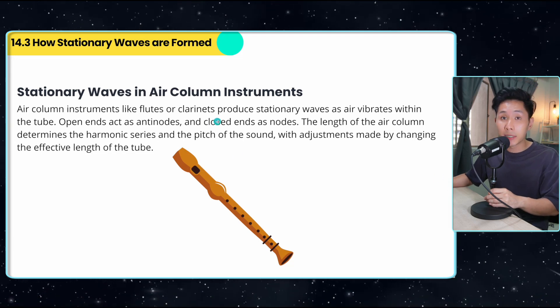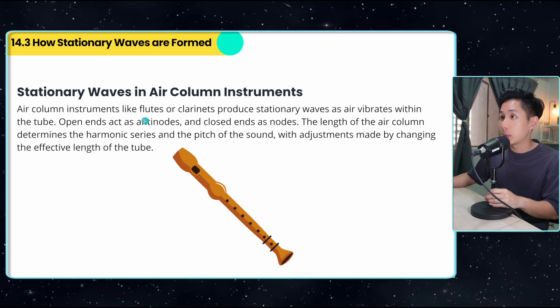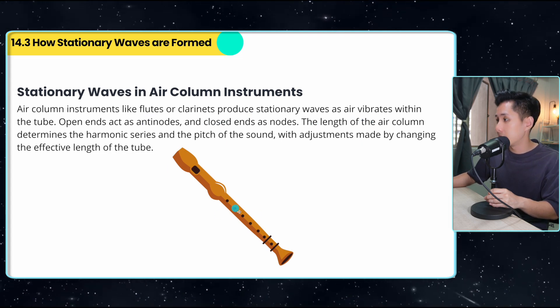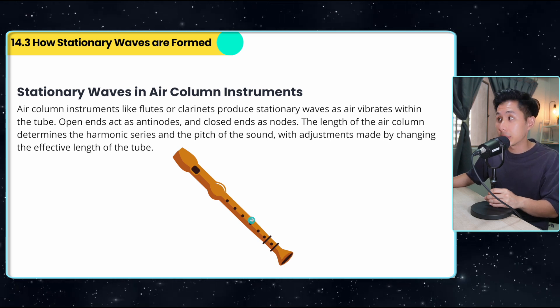So for the air column instrument, it's the same as well. They produce stationary wave as air vibrates within the tube. So you're going to close this tube to make sure that they vibrate differently to produce different harmonic.